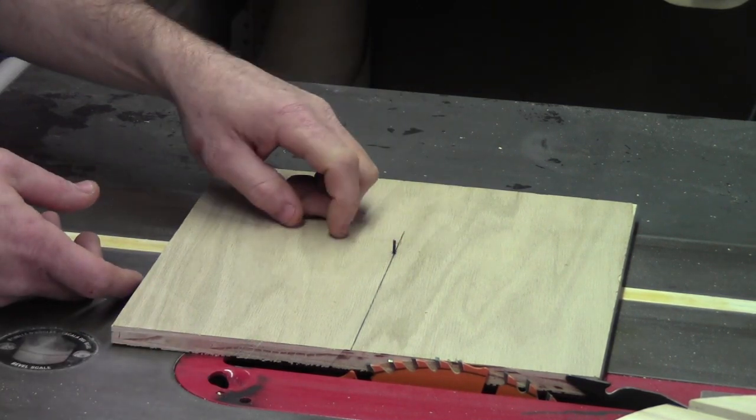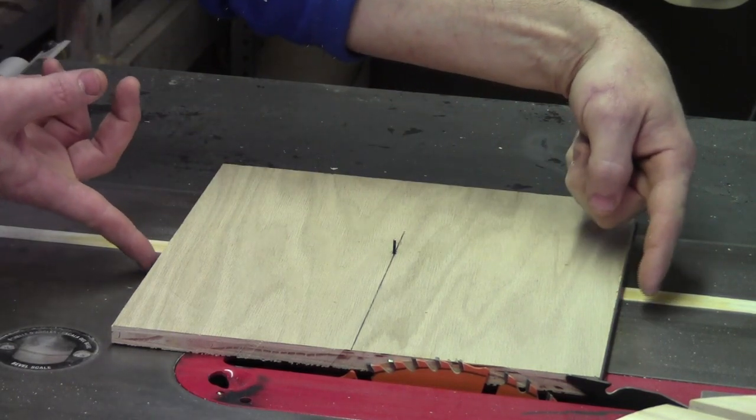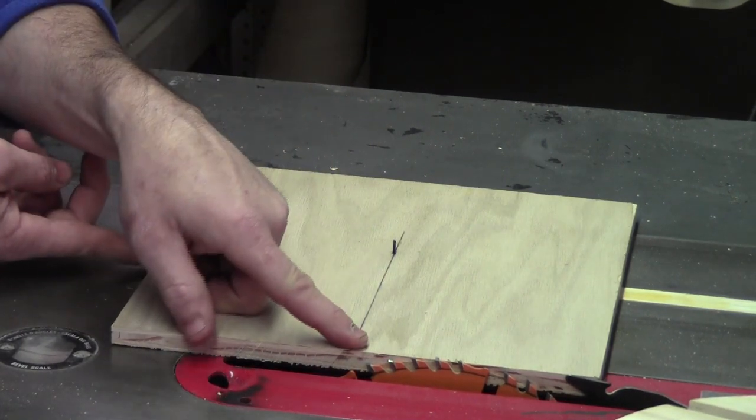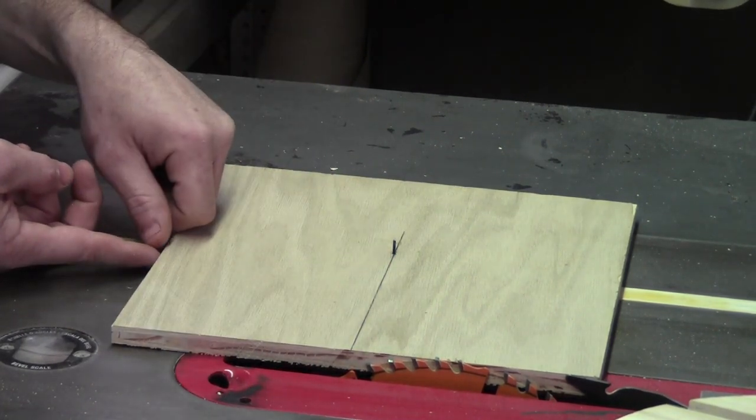Now, in order to find the location of this brad nail, I simply just measured the width of my half inch piece, found the center, and then from this edge, I marked over five and seven eighths of an inch and put the brad nail in.